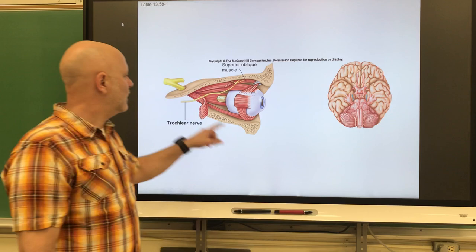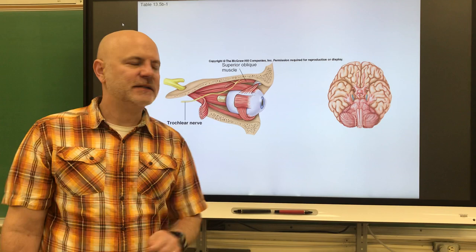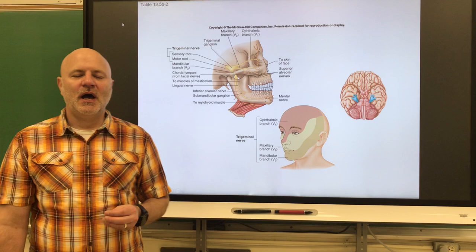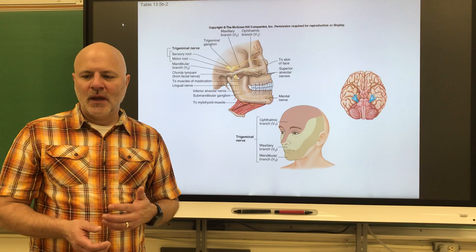Next is the trochlear nerve — you can see it coming off here and where it goes to on the eye. It is also a motor nerve and helps move the eyes.